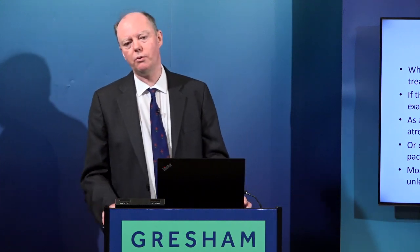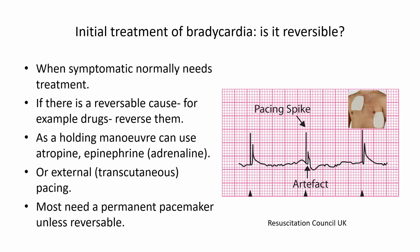The first question is always: is this reversible? The most common reversible cause is that people are taking drugs designed to block the AV node — perhaps at too high a dose — and easing back on the drugs allows the heart to return to normal. If needed to hold the line temporarily, drugs like adrenaline or atropine can be used to speed the heart up, but these are only appropriate for a short period and are not long-term solutions.